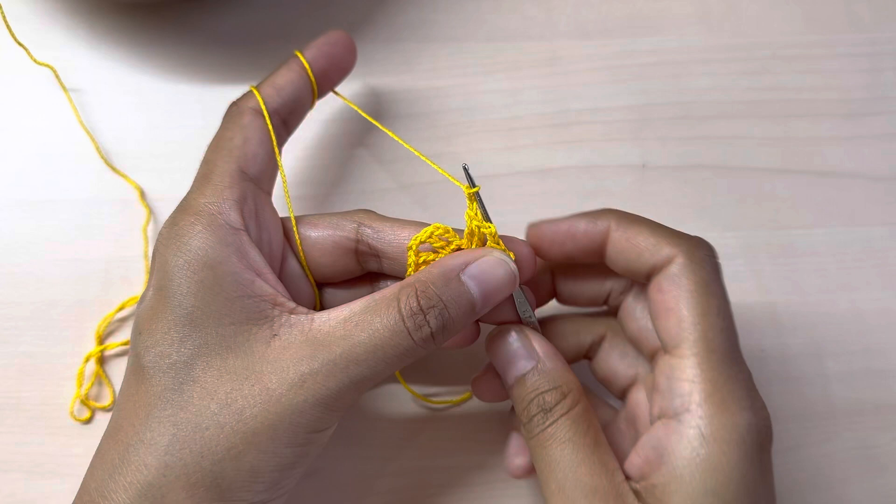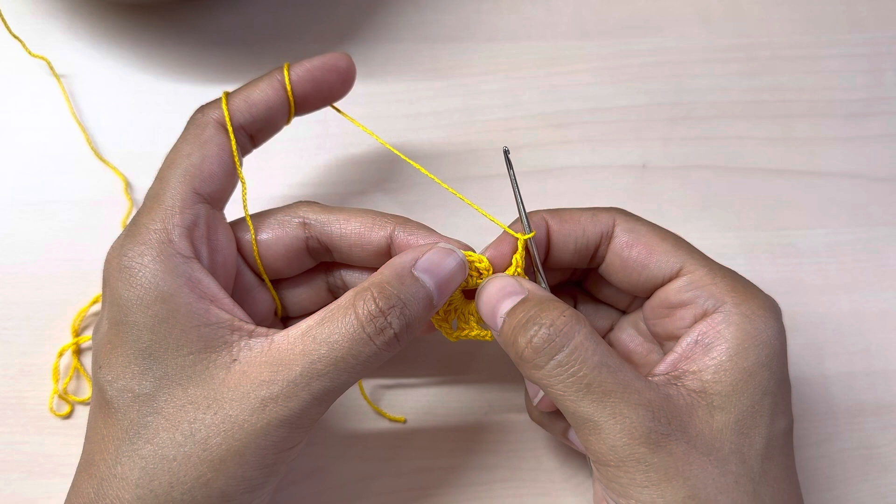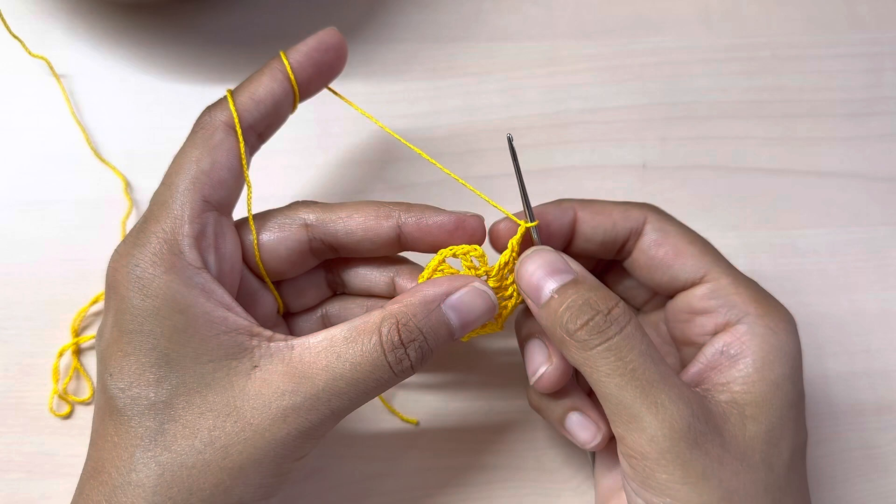Here I am at the end of my round. As you can see I have made eight sets of two double crochets and two chains. Here I will slip stitch into the very top of the first three chains that I had made which is also acting as my first double crochet. So I'm going to slip stitch into that, so that my first round is complete.